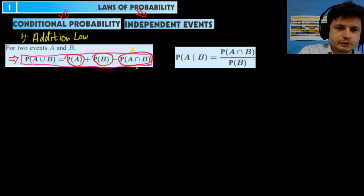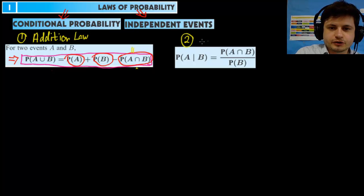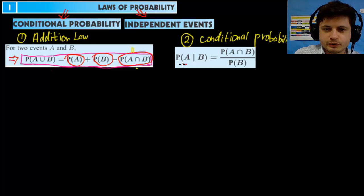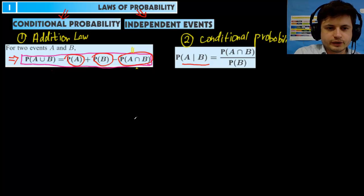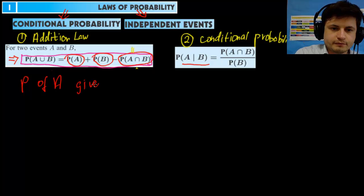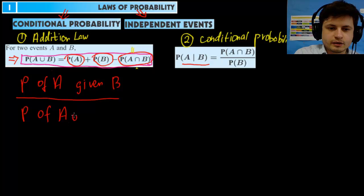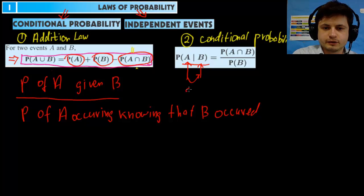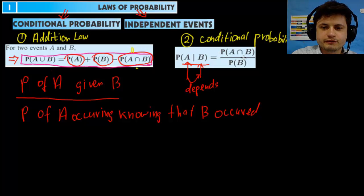The second rule is conditional probability. The notation with a bar between two letters — P(A|B) — is read as 'probability of A given B' or 'probability of A occurring knowing that B has occurred.' So A depends on B. The formula is: probability of A and B divided by probability of B.